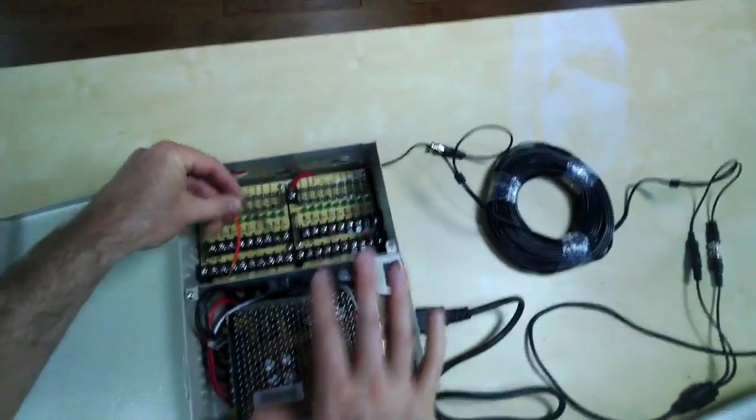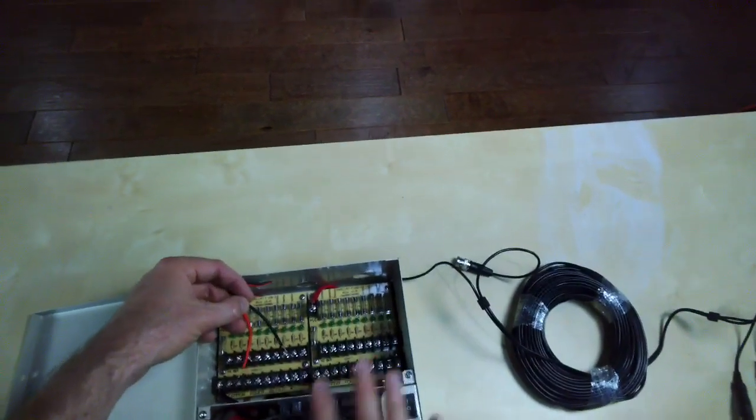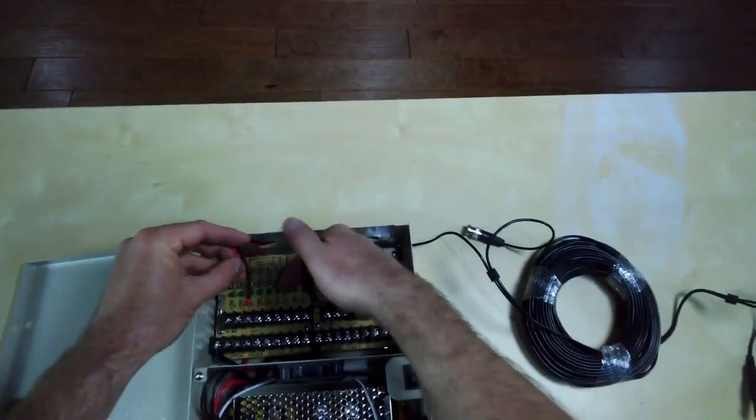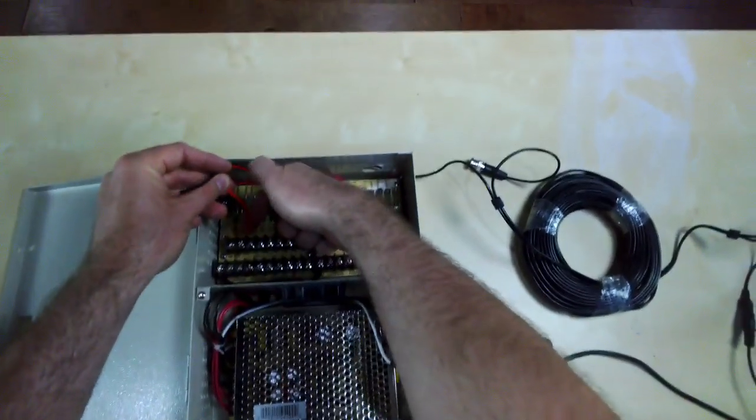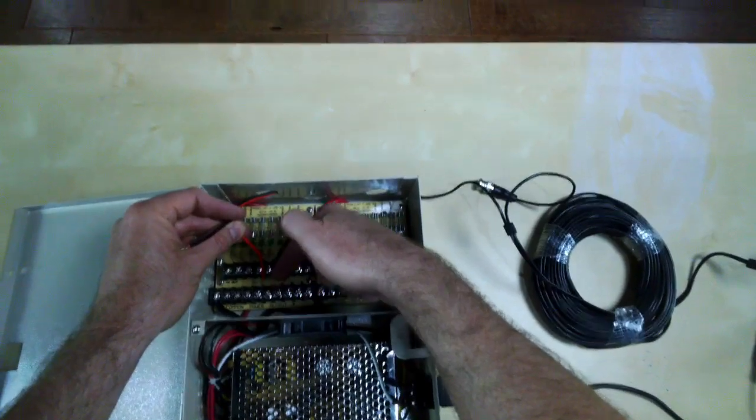Now, this is a DC powered power supply box, DC powered camera, and with DC power, polarity is important, so you need to be sure to connect the positive connection, which is the solid red, to the top terminal block, and then the ground or common to the bottom.